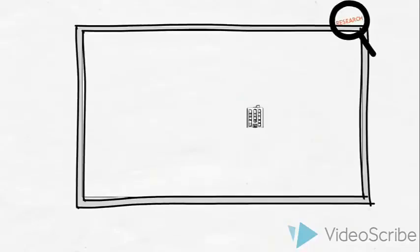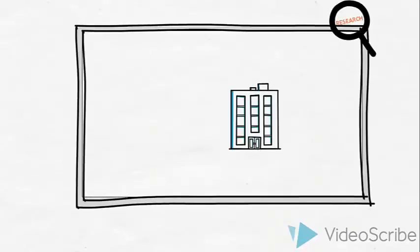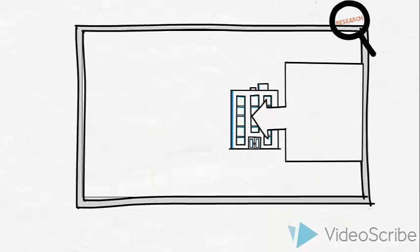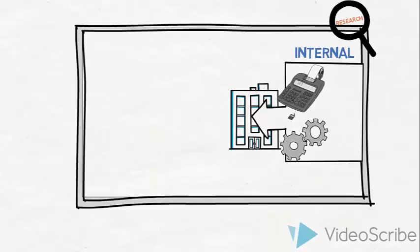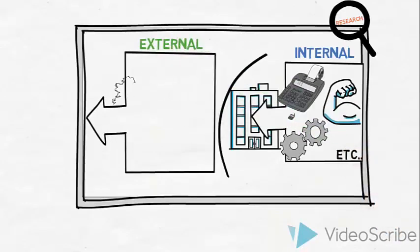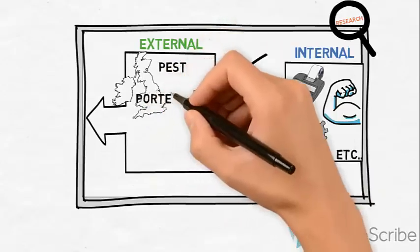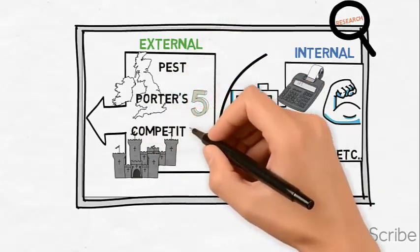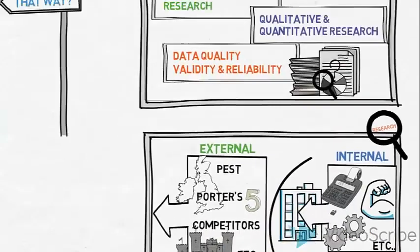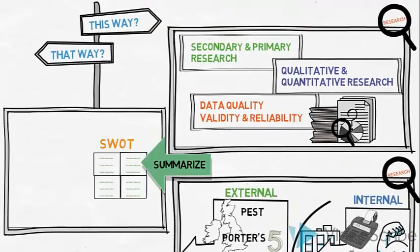The gathered data might be used in a process of conducting different analyses. Internal analysis, which could include a look at the company accounts, current business model, core competencies, and others. And external analysis, such as PEST, Porter's 5 Forces, competitor analysis, and others. And ultimately, they might summarize all their research in a SWOT analysis.